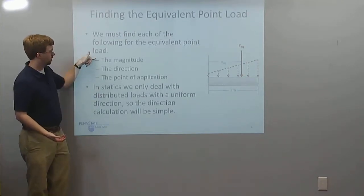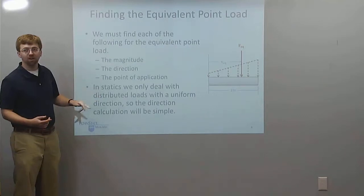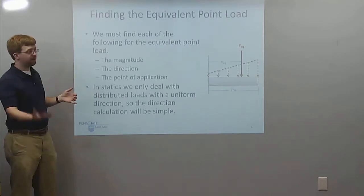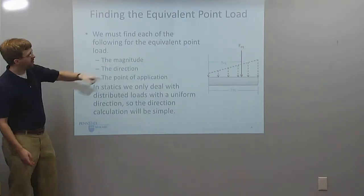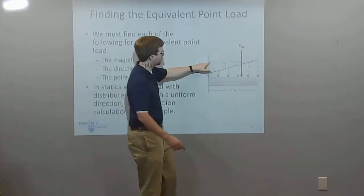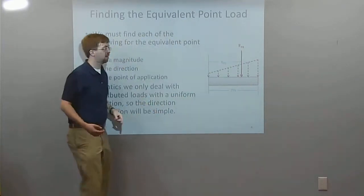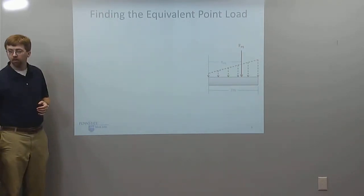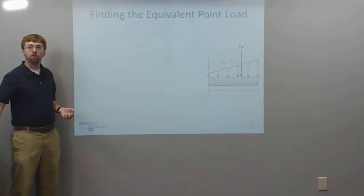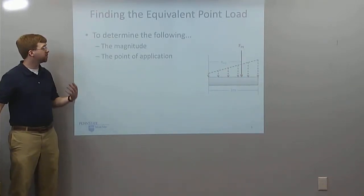I still need to find the magnitude and the point of application. The magnitude is going to be the variable F_EQ — the magnitude of my equivalent point load. And I only need to know one dimension along the beam, which is X_EQ as my point of application. So to find the equivalent point load, we need to find these two variables: F_EQ and X_EQ.